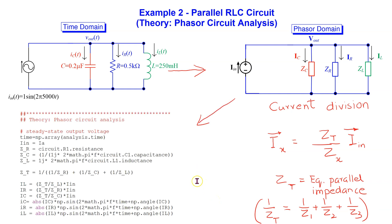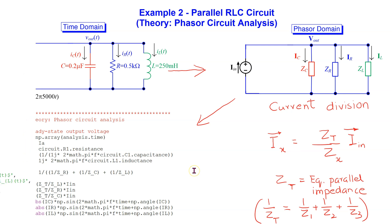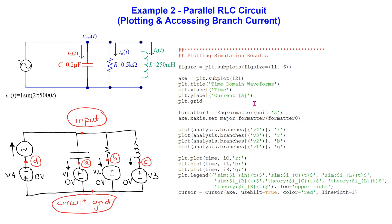The phasor calculations can be coded into Python as shown here. The plotting commands for the time domain current waveforms are shown. We can access the branch currents stored in the ideal independent 0V voltage sources using the syntax shown. We are plotting both the theory and the simulation values.